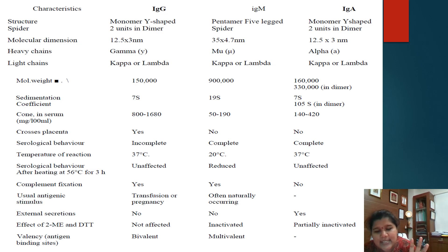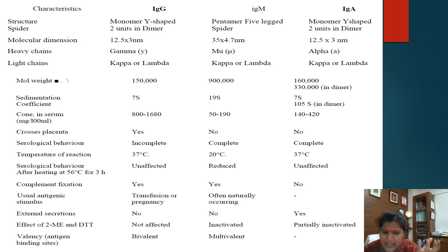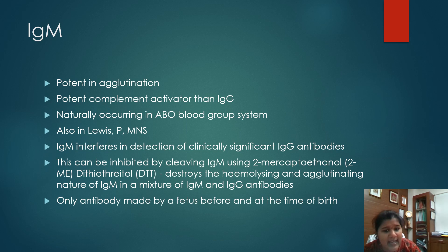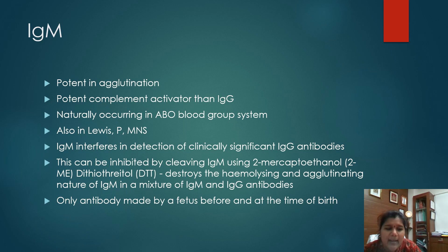Regarding valency — since IgM exists as a pentamer, that is 5 units together, and each has 2 limbs, they have a valency of 10, but all 10 need not be active due to structural hindrance. IgG is usually bivalent. IgM is a potent agglutinator and a very good complement activator — better than IgG in complement activation. Naturally occurring IgM is seen in the ABO blood group system, and is also present in the Lewis, P, and MNS systems.